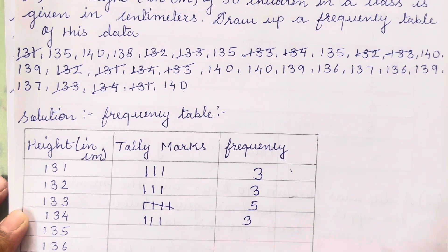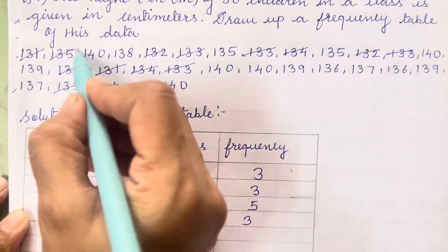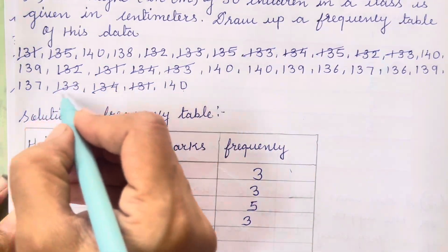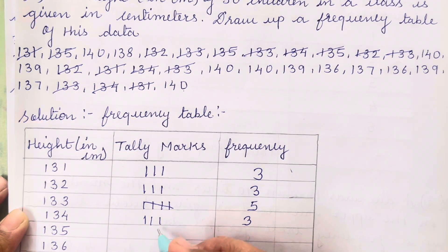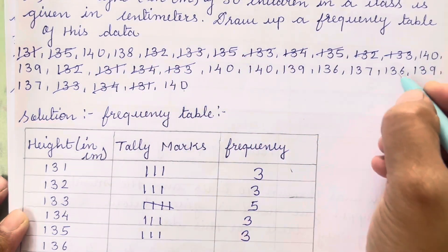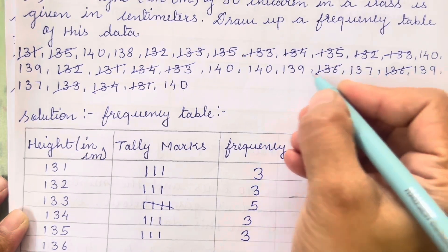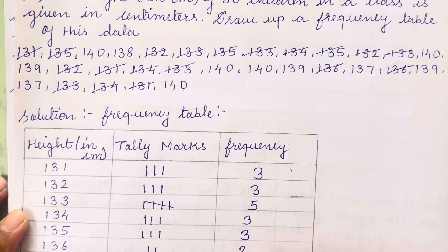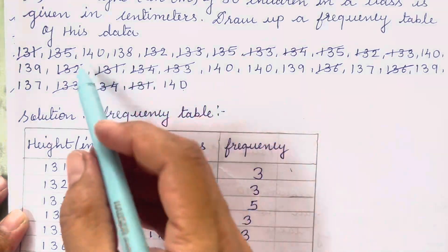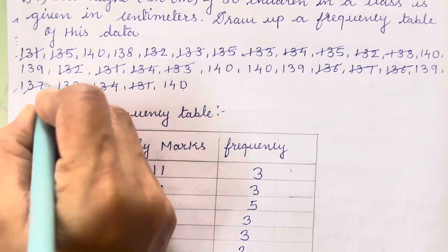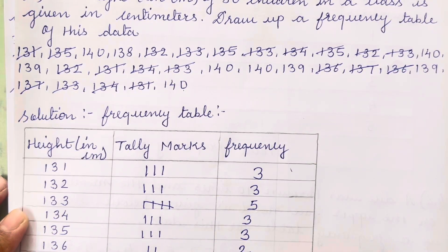For 135: 1, 2, and 3 — frequency is 3. For 136: 1, 2, and 3 — frequency is 3. For 137: 1 and 2 — frequency is 2.